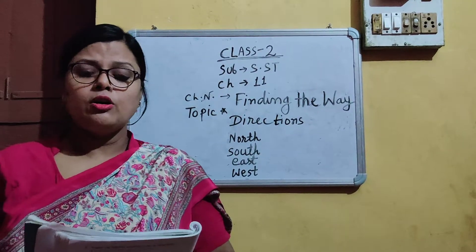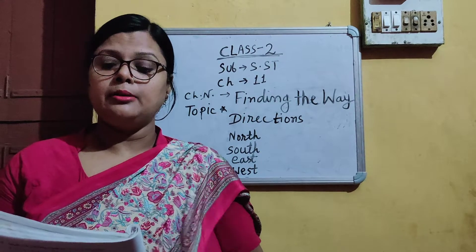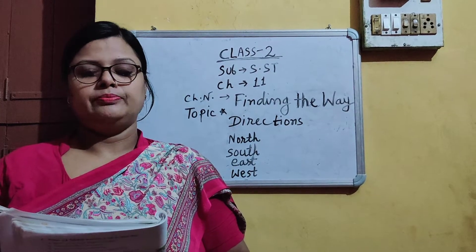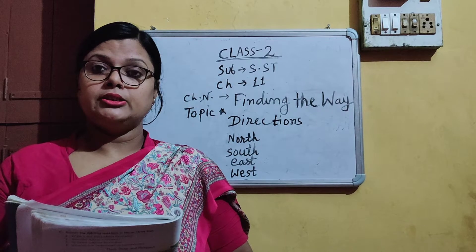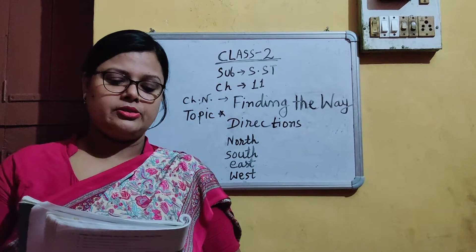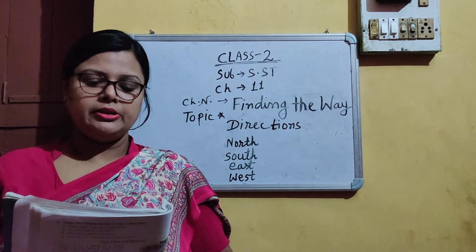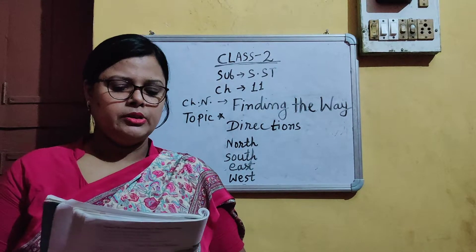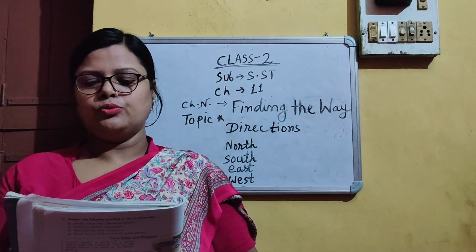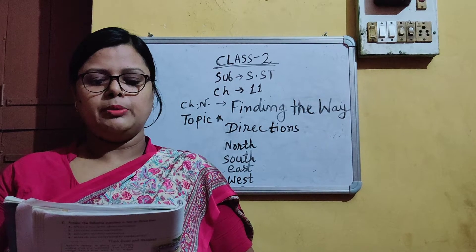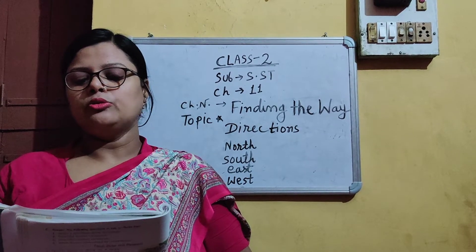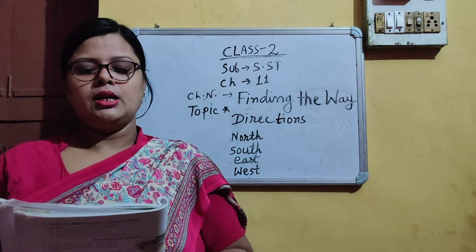As we all know, the sun helps us to find direction. The four main directions are north, south, east and west. Direction helps us find the way. We use four sides to give information about the position in relation to others around us.